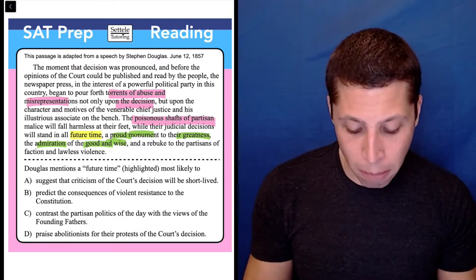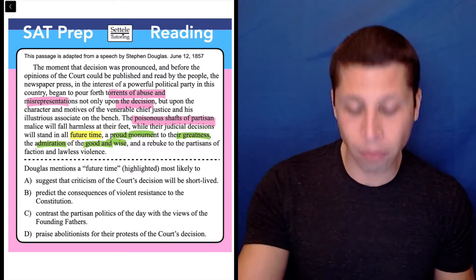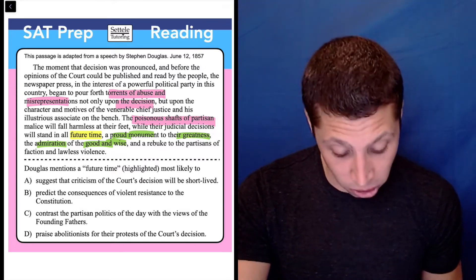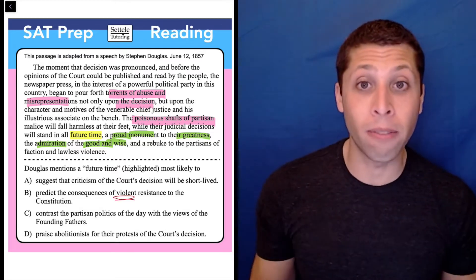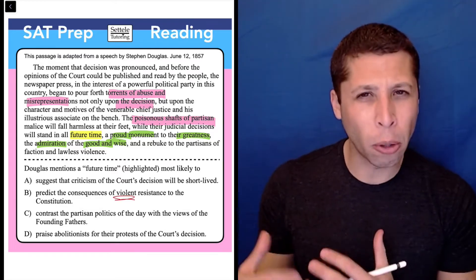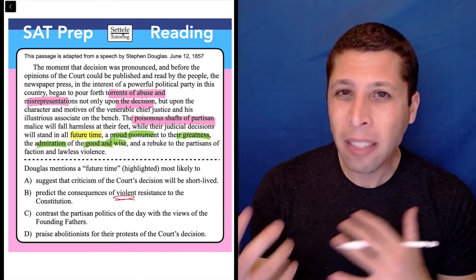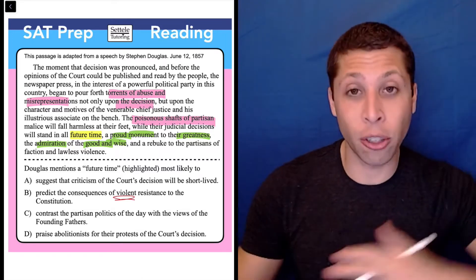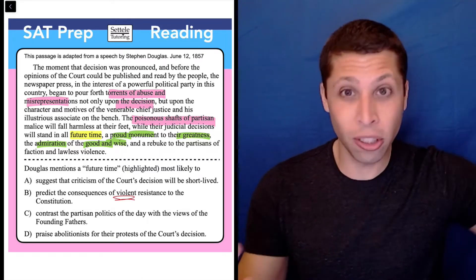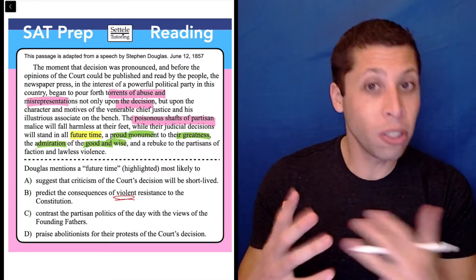Let's look at choice B, predict the consequences of violent resistance to the constitution. There's some strong words here. The strongest probably being violent, right? They're talking about people criticizing a decision. That's a big leap to go from criticizing it to violent resistance. There's no bloodshed here. So this is a big leap.